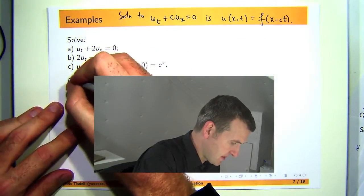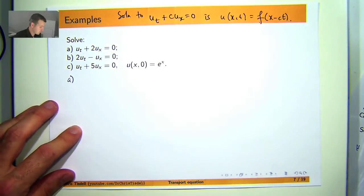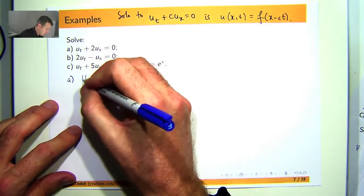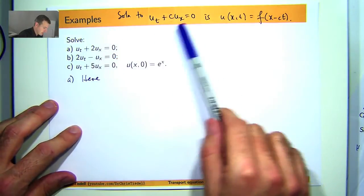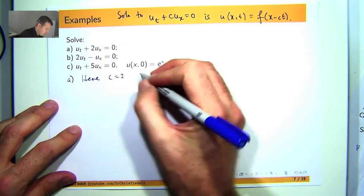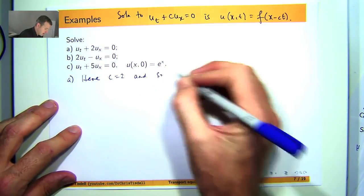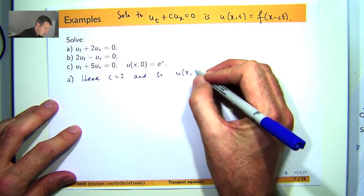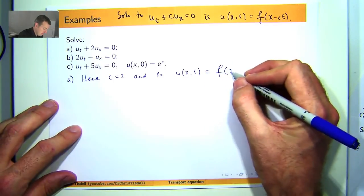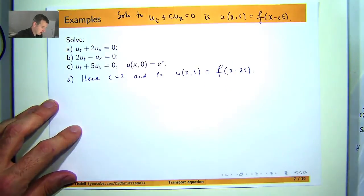So let's just go through and solve each of these really simple problems. So here C would be 2 and so I can write down the general solution right away.